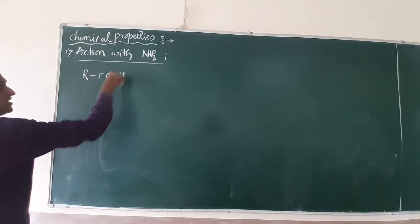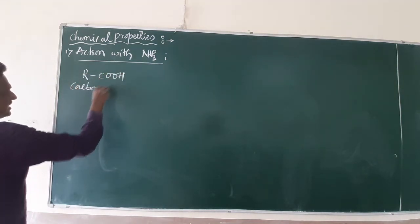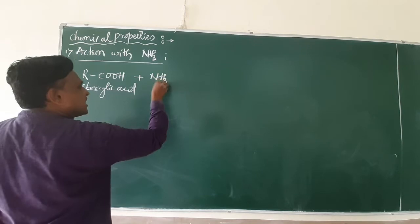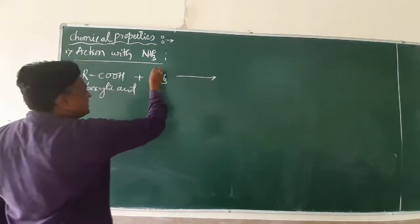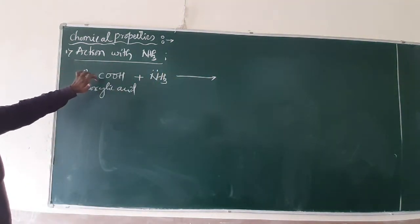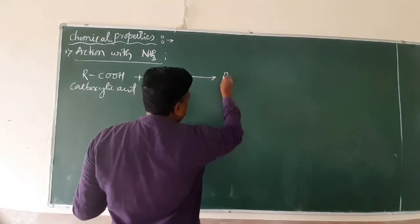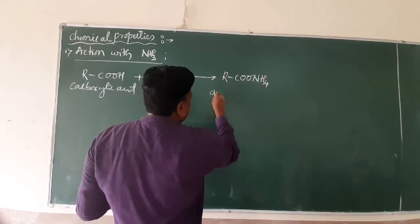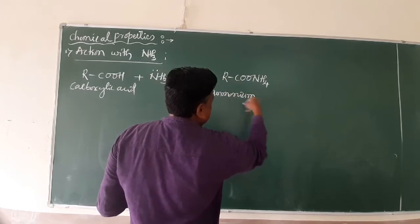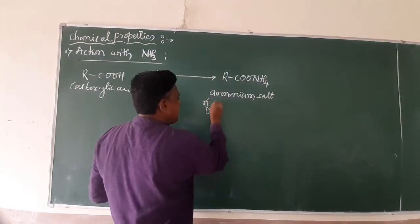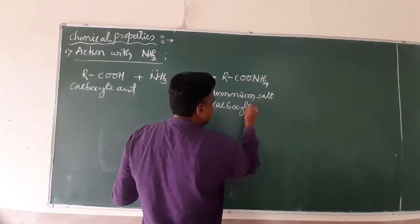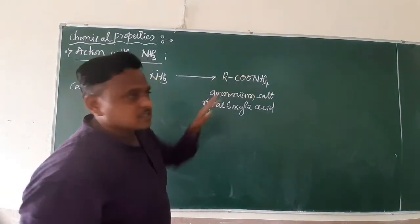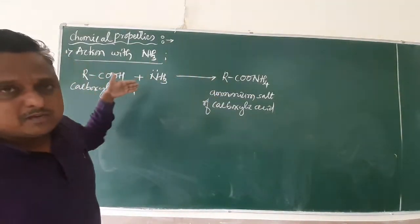Consider a carboxylic acid with the group –COOH. When this carboxylic acid reacts with ammonia (NH₃), since ammonia is a base and we are combining a base with an acid, the product formed is a salt: R–COO–NH₄⁺, which is named the ammonium salt of the carboxylic acid, also known as ammonium carboxylate.